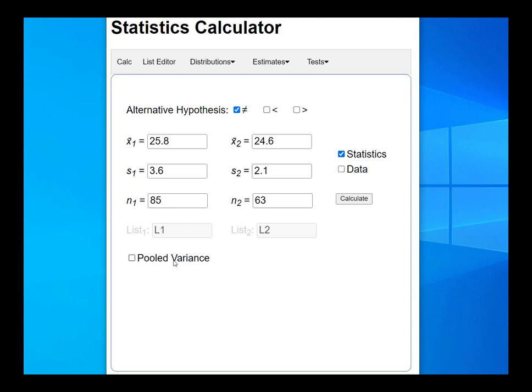Lastly we have here this item that says pooled variance. You might want to ask your instructor for clarification if you're uncertain, but in most instances at the elementary level we don't worry about pooled variances, so we would just leave this unchecked. You don't even need to worry about it.